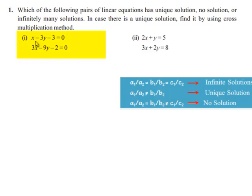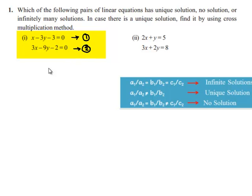Coming to the first bit: x - 3y - 3 = 0 and 3x - 9y - 2 = 0. Let this be equation number 1 and this be equation number 2.